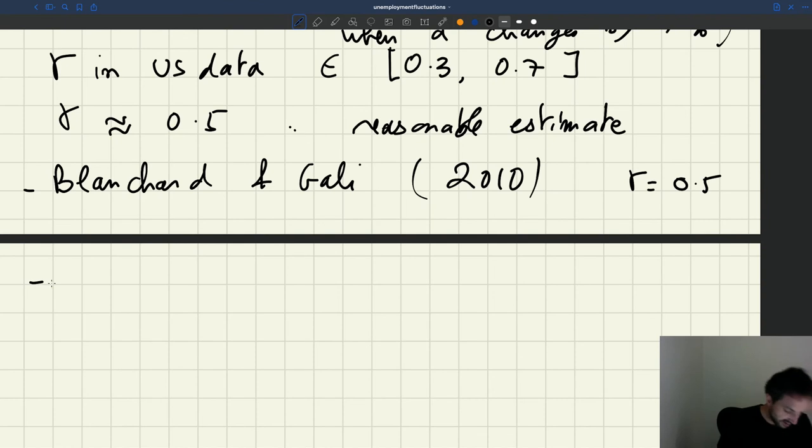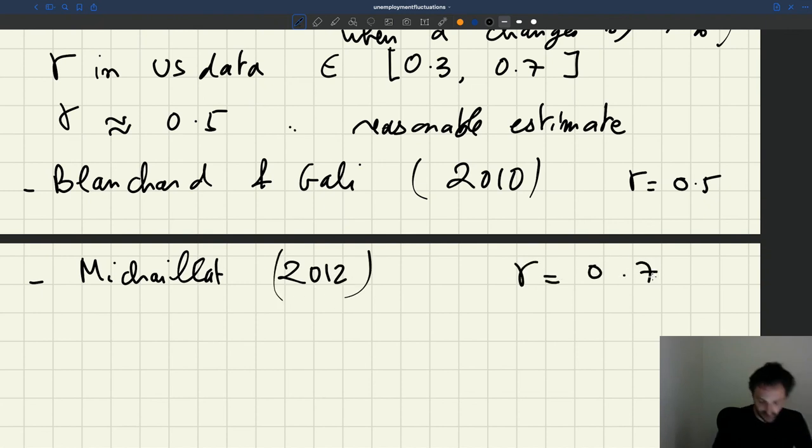And in fact there, they used gamma equal to 0.5 in their model. And in my PhD thesis, and that's assigned as a reading, I've also used that type of assumption and showed some of its implications. And there I used a gamma that's a bit higher, 0.7, to show that even if you take a gamma that's quite high, you get a lot of realistic properties out of the model.